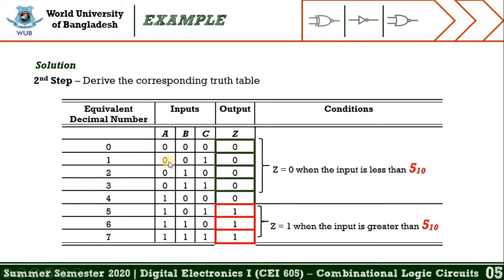The 8 input combinations are: 000, 001, 010, 011, 100, 110, and so on. The output condition has two cases: output is 0 when the input is less than decimal 5, and output is 1 when the input is greater than 5. The first condition is marked in the top portion of the truth table, and the second condition is indicated in the bottom portion.